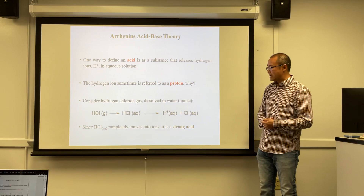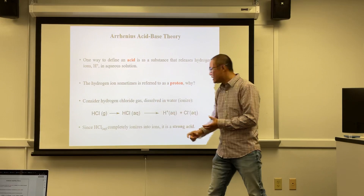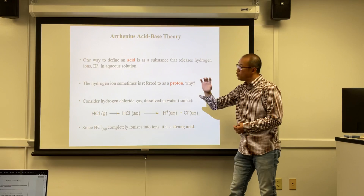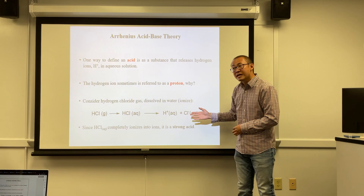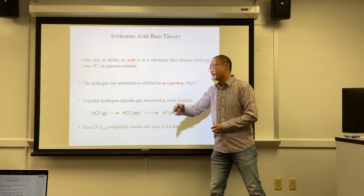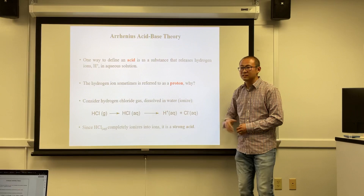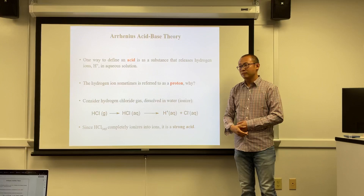When HCl dissolves in water, it completely ionizes — the bond completely breaks and you have no intact HCl molecules left. All you have in the HCl solution are protons and Cl− ions. An acid that completely ionizes like this is called a strong acid.